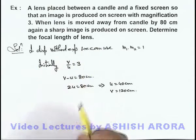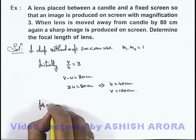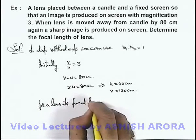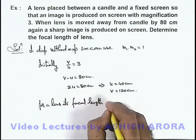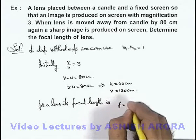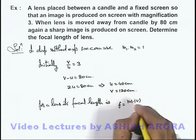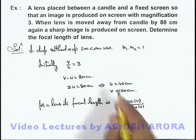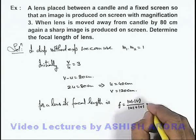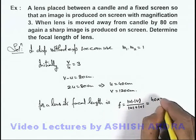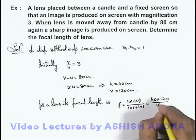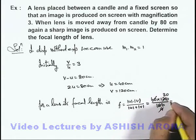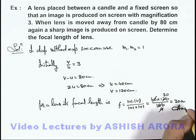To find the focal length of the lens, we apply the lens formula. In magnitude, f equals the product of |u| and |v| divided by the sum |u| plus |v|, which you can verify from the lens formula. Substituting the values: f equals 40 multiplied by 120 divided by 160, giving us a focal length of 30 centimeters.